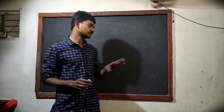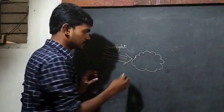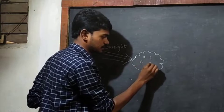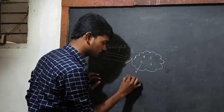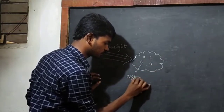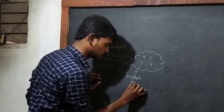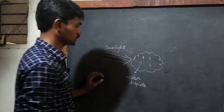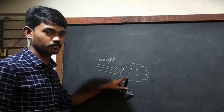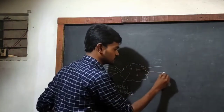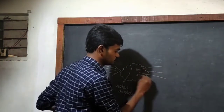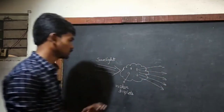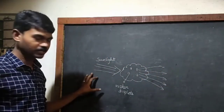First of all, the sunlight falls on the clouds. Inside the clouds, there are many more water droplets present. Here, these are the water droplets. The sunlight strikes the water droplets and it will be scattered.